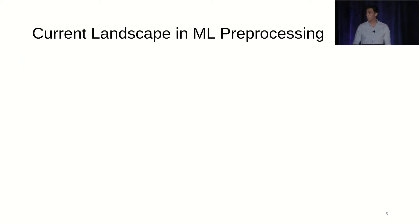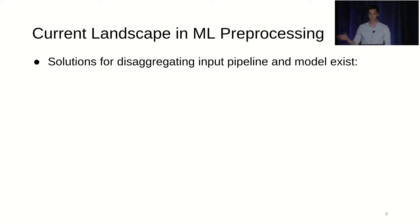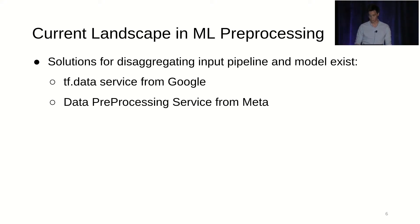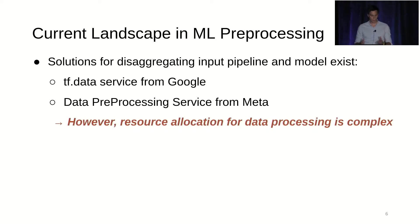The current landscape in ML pre-processing doesn't really lack solutions for disaggregation that would allow us to scale the input pipeline out. A good example is TF Data Service from Google or the data pre-processing service from Meta, which is unfortunately closed source. So the fundamental mechanism is already there.